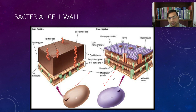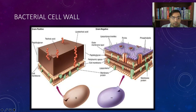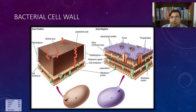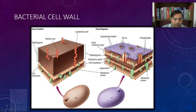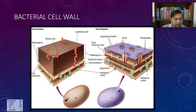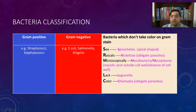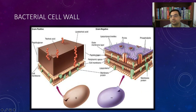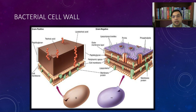Endotoxins are produced only by gram negative bacteria, and they come from the lipopolysaccharides — the lipopolysaccharide acts as endotoxin. So gram negative produces both exotoxin and endotoxin, whereas gram positive produces only exotoxins.